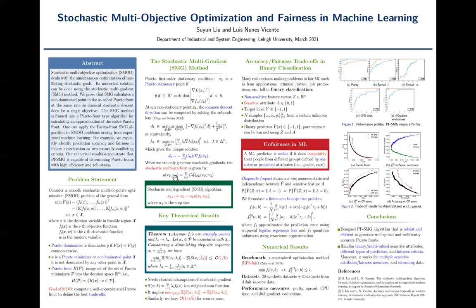And then the common descent direction D-K can be approximated using stochastic multi-gradient, which is written as still the convex combination of the stochastic gradients.